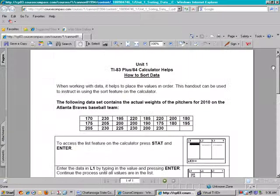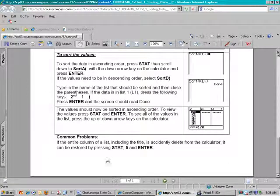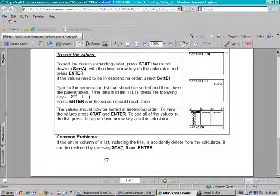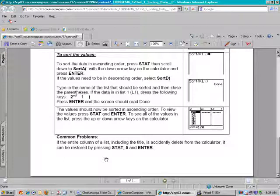At the beginning we can see it starts out talking about a set of values, but what I want to do is scroll down to the bottom and show you something very important. There is a common problem - a lot of times people accidentally delete lists out of their calculator. Notice at the bottom, if the entire column of a list including the title is accidentally deleted from the calculator, it can be restored and we have the commands for this.